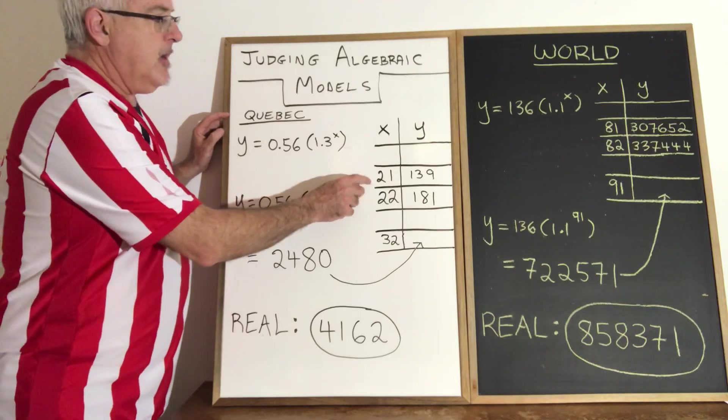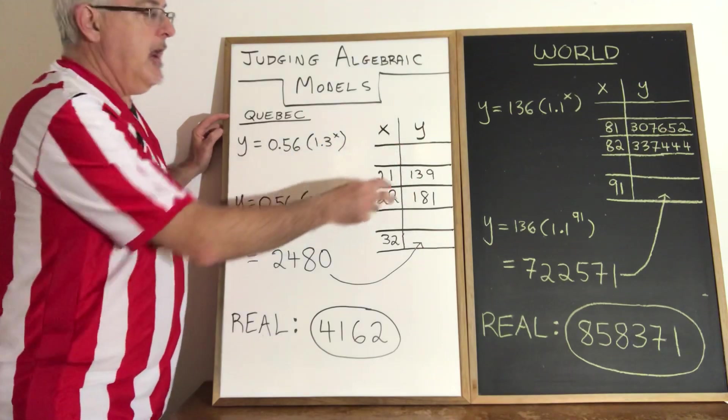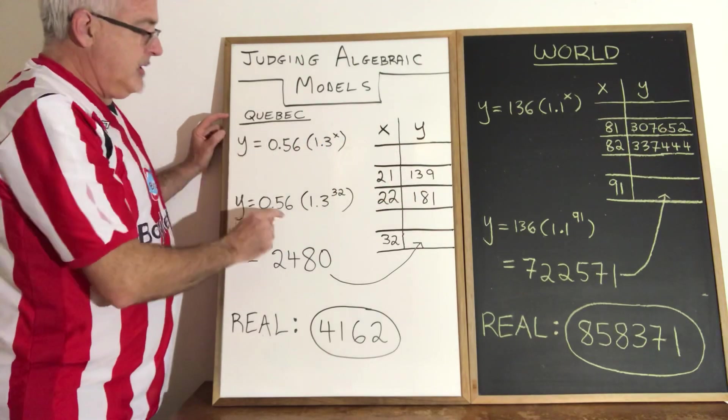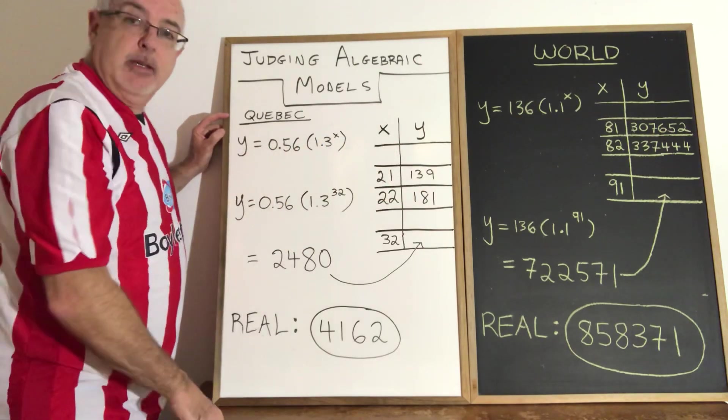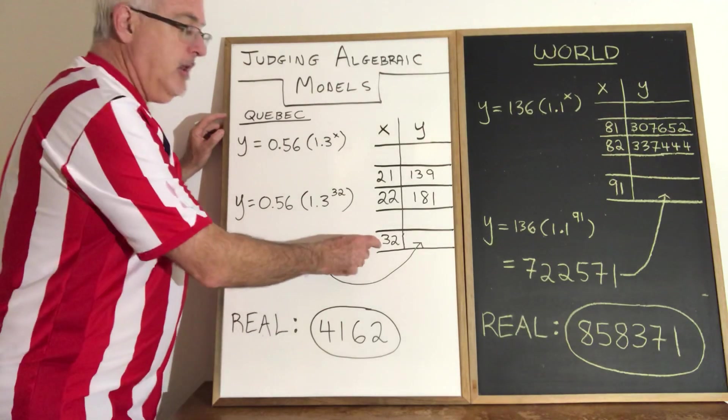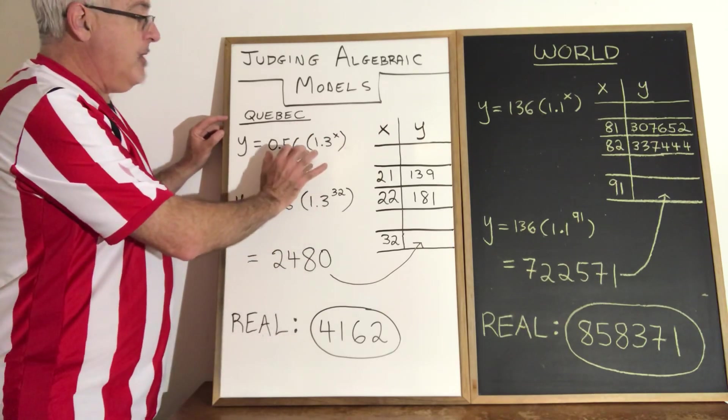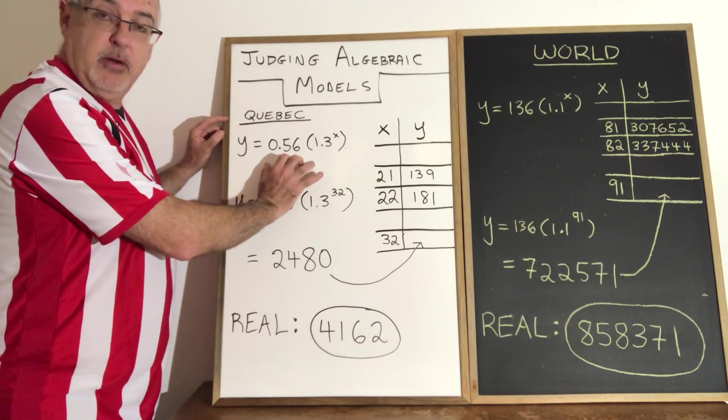In Quebec we used values from day 21 and day 22 of 139 and 181 to produce this equation y equals 0.56 times 1.3 to the x. Then we plugged day 32, which was March 31st.